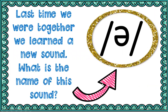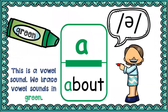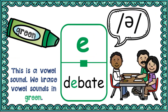Now, last time we were together we learned a new sound. What's the name of this sound? It's the schwa. We learned the schwa sound, and this is your symbol for it. The schwa sound says 'uh,' and remember it can change based on where you are in the United States, so the schwa sound is not always the same everywhere you go. Like in the word 'debate' — your schwa here is your 'e,' so it's not saying the typical 'e' sound, it's saying 'uh.'